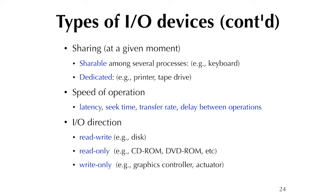There are also different speed classes with different aspects of latency and transfer rate. The direction of I/O could be read-write, read-only, or write-only. Write-only would be an output device — speaker, graphics controller, or other actuator. Some are read-only, like ROM or CD-ROM. Read-write would be magnetic disk or flash memory.